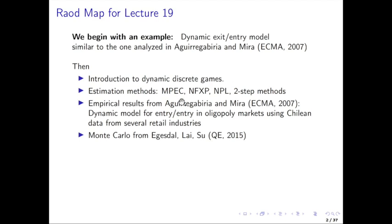After that discussion, we're going to look at empirical results for Aguirregabiria, Barea, and Mira, and discuss their findings from the Econometrica paper, where they're estimating this dynamic model of entry and exit using data for oligopoly markets in Chile from several retail industries, like restaurants and gas stations. They're comparing like five different markets, and we'll see what those data imply through the lens of the model in terms of fixed costs, entry costs, and strategic interactions relative to the amount of profits and how that varies across different markets.